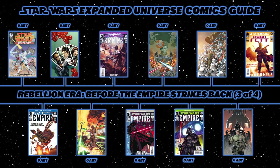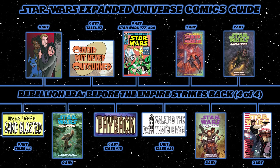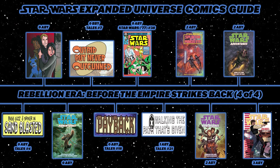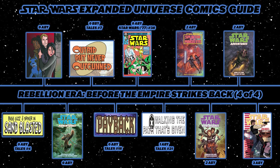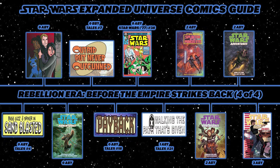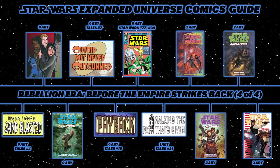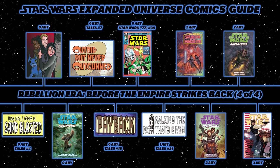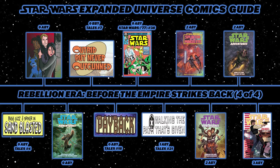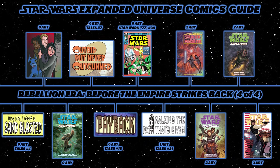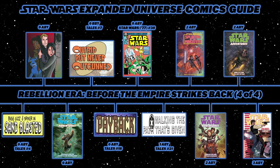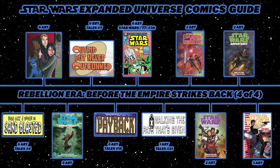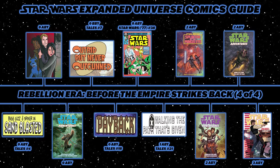Then the Boba Fett one-shot Boba Fett: Overkill. Then Star Wars Tales number 4's Sandblasted. Then the Hyperspace web strip Rookie's Rendezvous, followed by Rookie's No Turning Back. Then Star Wars Adventures: Chewbacca and the Slavers of the Shadowlands. Then Star Wars Tales number 7's Outbid But Never Outgunned, featuring the first appearance of Boba Fett's former wife Sintas Vel and daughter Ailyn Vel. Then Star Wars Tales number 18's Payback. Then back into Marvel 1977 issue 38: Riders in the Void. Then Star Wars Tales number 21's Walking the Path That's Given. Then into 2 ABY with Splinter of the Mind's Eye, an adaptation of the first follow-up novel to the original Star Wars film.